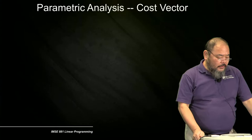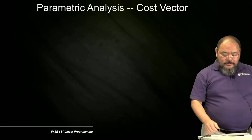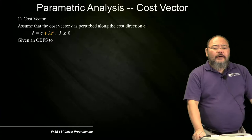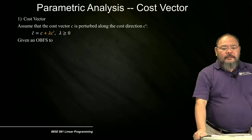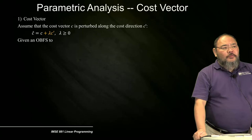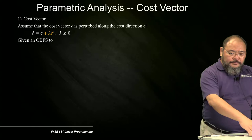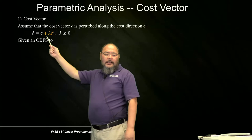Let's see what happens if we change our cost factor, assuming that the cost factor C is perturbated along the cost direction of C prime. It could be one element or a whole vector. So C_hat, the new cost factor, equals the original C plus lambda times C prime. C prime is the change of the cost factor, and lambda is the multiplier.